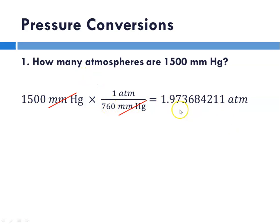We put in our calculator 1,500 divided by 760. That gives us this number, which has way too many significant digits. Notice the measurement we were given had two sig figs. Our second significant digit is the 9, and the number immediately following it is a 7, so we round up to 2.0 ATMs.